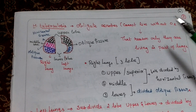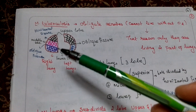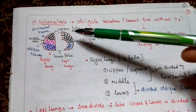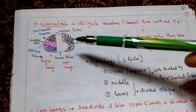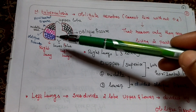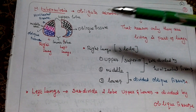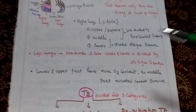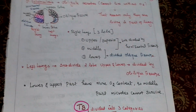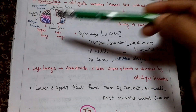Mycobacterium tuberculosis is an obligate aerobic organism and cannot live without oxygen. In the lungs, the right side has three lobes: upper (superior), middle, and lower lobe, separated by horizontal and oblique fissures. The left side has two lobes: upper and lower, separated by an oblique fissure. The upper and lower parts have more oxygen content, while the middle part has less oxygen. Therefore, the organism can survive in the upper and lower parts only, not in the middle part.